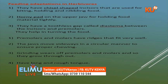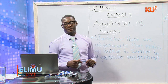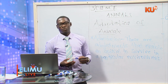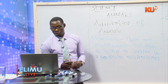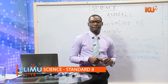The chisel-shaped incisors in herbivorous animals are used for biting, holding, and nibbling food. They also have what is called a honey pad. The honey pad is found on the upper jaw, and its purpose is to hold food material so that it can be cut by the incisors on the lower jaw. The main purpose of the honey pad is to hold the food matter as it is being cut by the incisors.